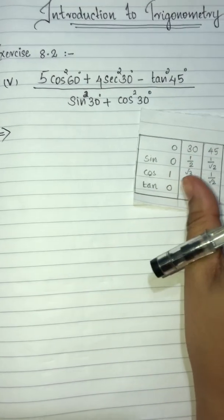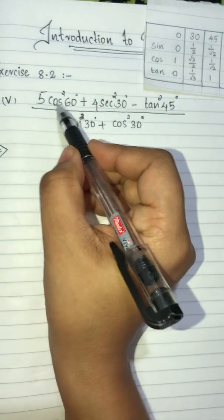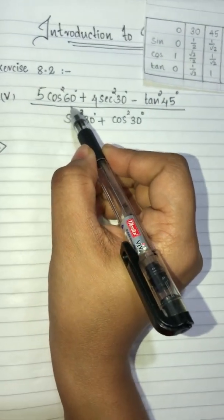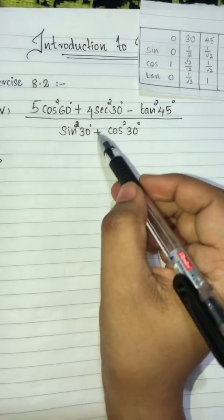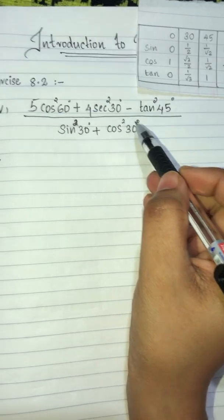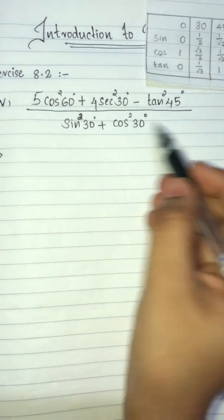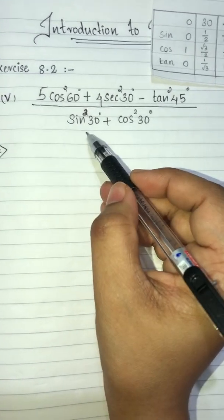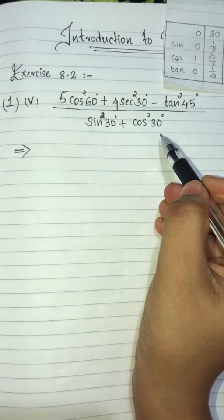This table will make it easy to answer. The question is: 5 cos²60 + 4 sec²30 − tan²45, divided by sin²30 + cos²30.